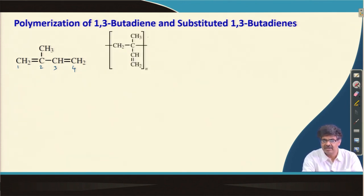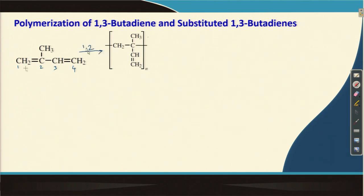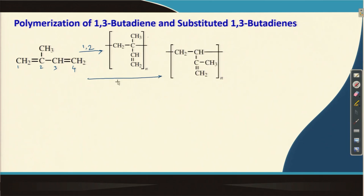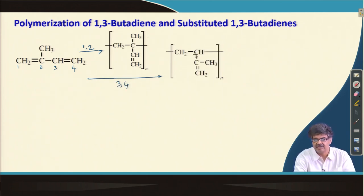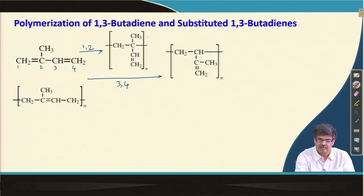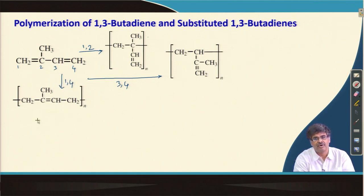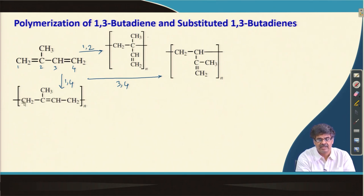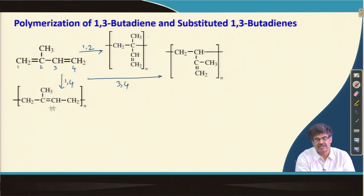The 1,4-polymerization is more probable because when an active center — either a cation, radical, or anion — forms, it can participate in resonance conjugation to proceed the polymerization in this fashion. These 1,4-polymers can also have two stereo isomers, because there is a double bond remaining, and across a double bond we can have cis or trans arrangement. So we can have cis-1,4 and trans-1,4 polymers.